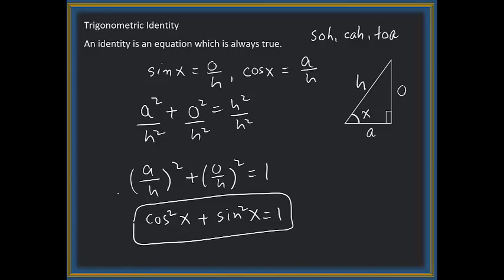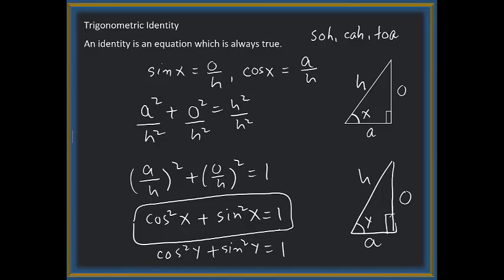This is called a trigonometric identity because for any reference angle — whether we call it x or y — the right triangle will still give cosine² y + sine² y = 1. For all values of the angle, sine² x + cosine² x = 1, regardless of whether you use radian or degree measure. This is called the first trigonometric identity.